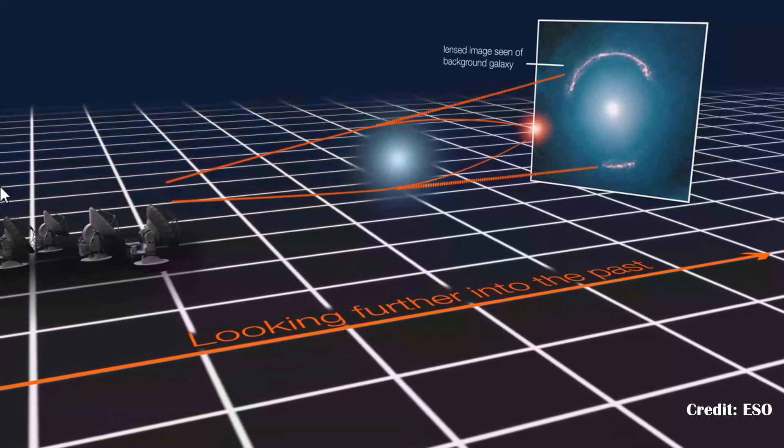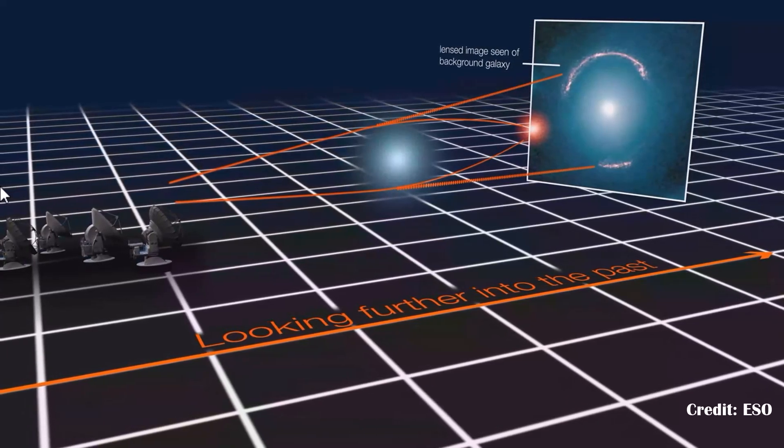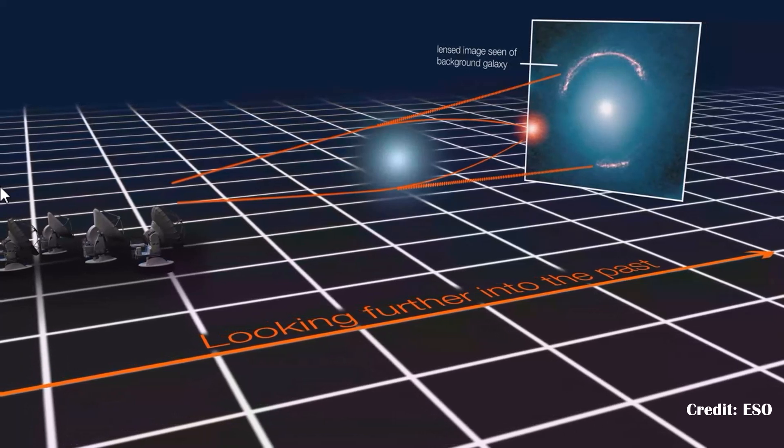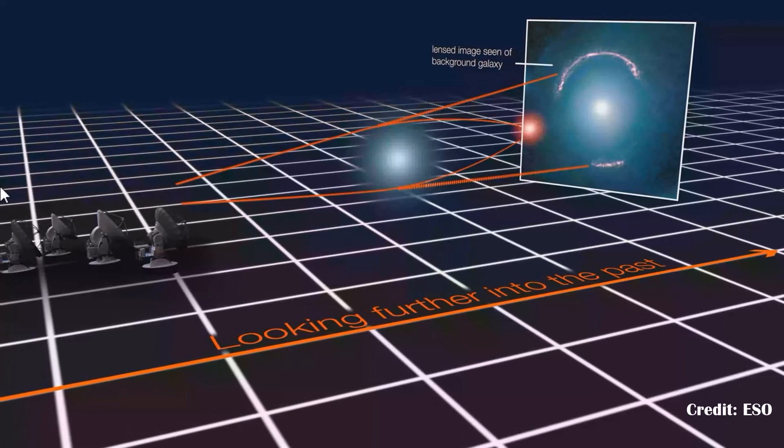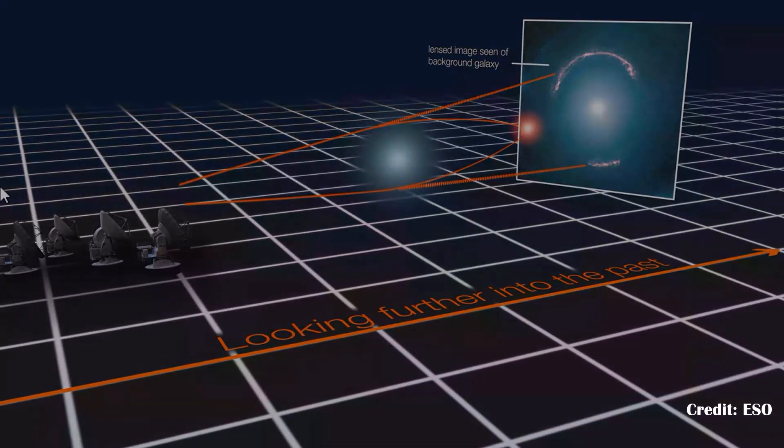The more massive an object, the greater the lensing effect, and for entire galaxies, this lensing effect we observe is far greater in reality than that of a theoretical galaxy which only contains stars, once again pointing towards missing matter inside galaxies.